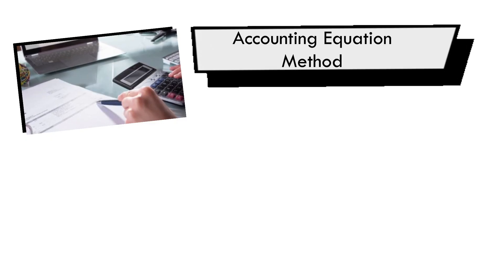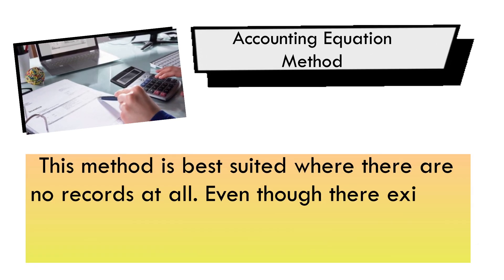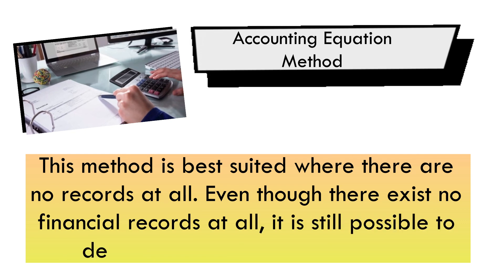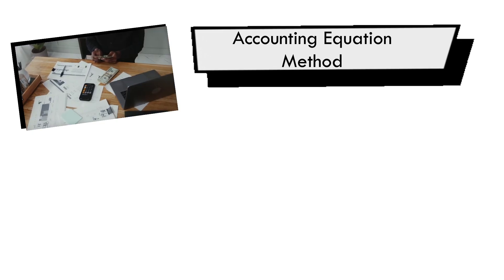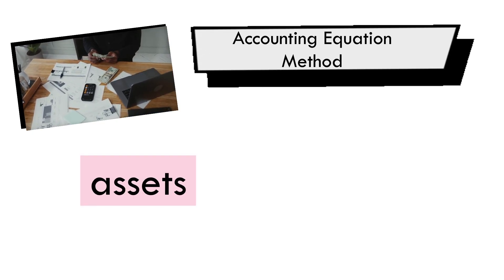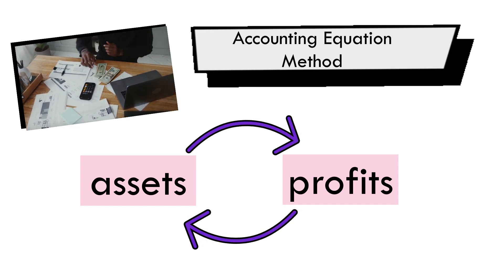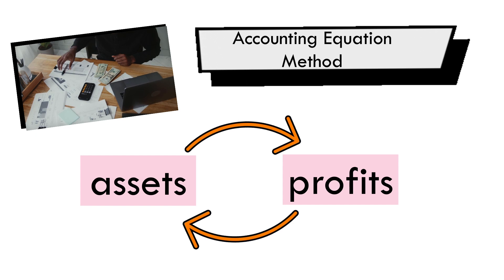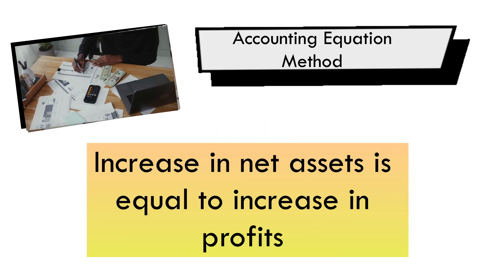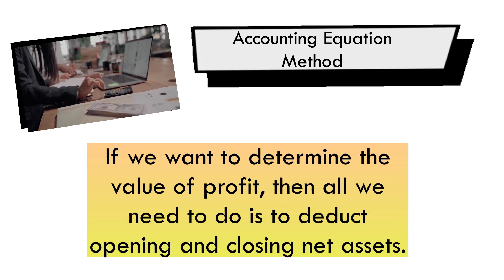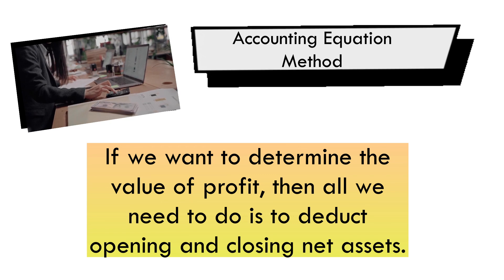Starting with the first one — the accounting equation method — this method is best suited where there are no records at all. Even though there exist no financial records, it is still possible to determine the profit or loss figure. This is because assets and profits have a positive or direct relationship. Any increase in profit of a business must be represented by more assets. Thus, an increase in net assets equals an increase in profits. If we want to determine the value of profit, all we need to do is deduct opening from closing net assets.